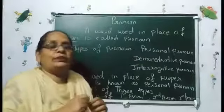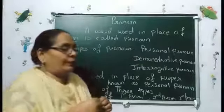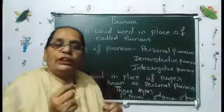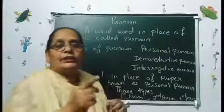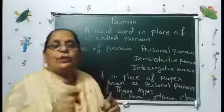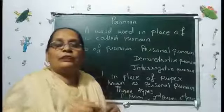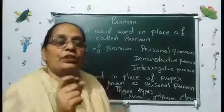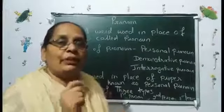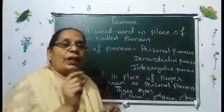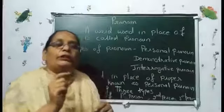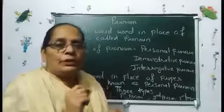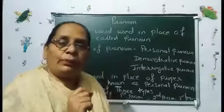Now let's see another example. It is a chair. It is brown color. It has two handles. We don't use 'chair' again — what we have used in place of the noun, that word is a pronoun.